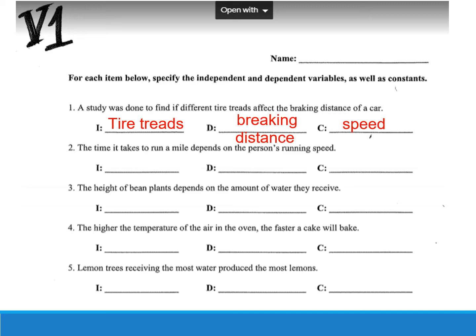Number two: the time it takes to run a mile depends on the person's running speed. When you see 'depends on,' a lot of times your IV is going to follow that — and that's exactly the case here, so the IV is running speed. The DV is how long it takes them to finish — the time, measured in minutes, seconds, or whatever increment you want. For the CV, the distance is kind of stated: they're going to run a mile, and you could also pick the shoes they wear or the same track and terrain.